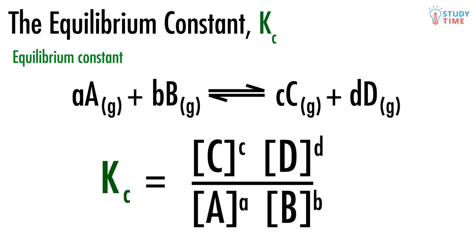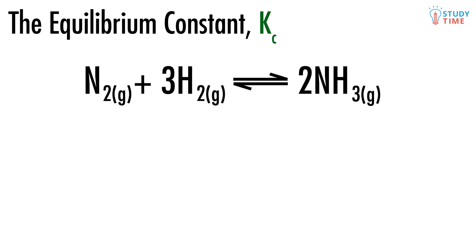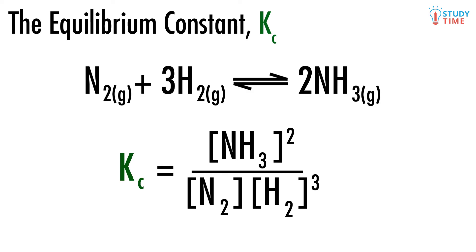Let's look at what the equilibrium constant would look like for our ammonia reaction. The original reaction was N2 plus 3H2 reacts to produce 2NH3. So our equilibrium constant is going to look like this.